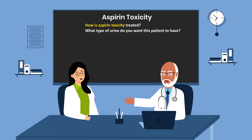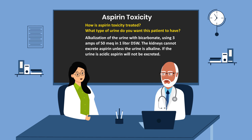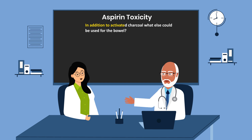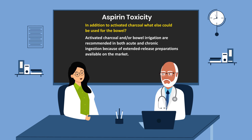Let's talk about aspirin toxicity treatment. What type of urine do you want this patient to have? Alkalinization of the urine with bicarbonate — using 3 amps of 50 mEq in 1 liter of D5W — is the treatment of choice. The kidneys cannot excrete aspirin unless the urine is alkaline; if the urine is acidic, aspirin will not be excreted. In addition to activated charcoal, activated charcoal and/or bowel irrigation are recommended in both acute and chronic ingestion because of extended release preparations available on the market.